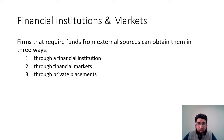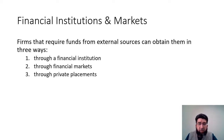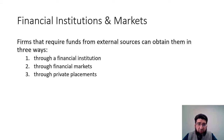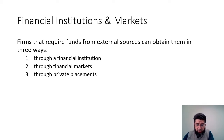Financial institutions and markets is a broader term, and we can understand this entire ecosystem by looking at a firm. The firm requires funds from external sources and it can obtain them in three ways: through a financial institution, through financial markets, or through private placements.